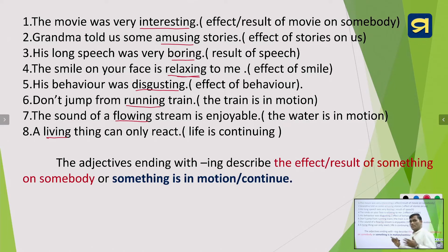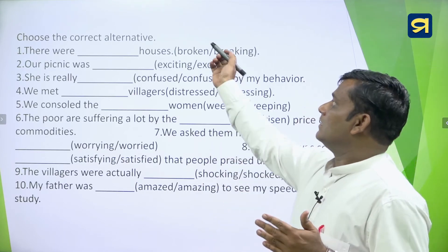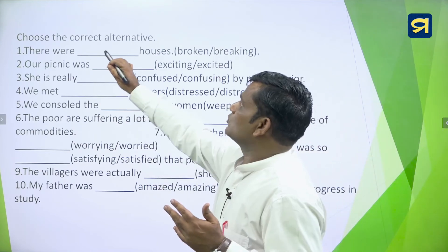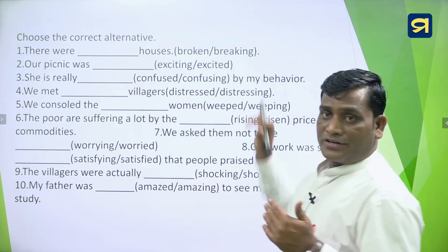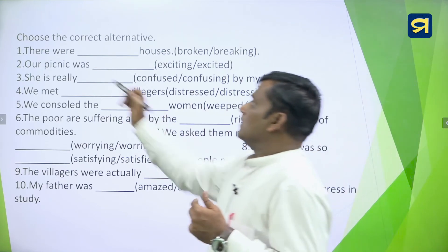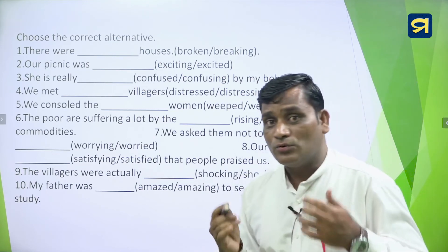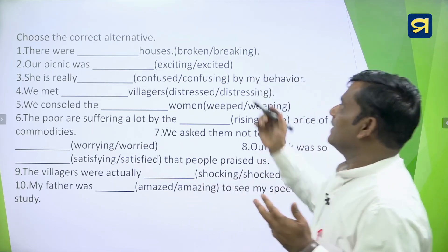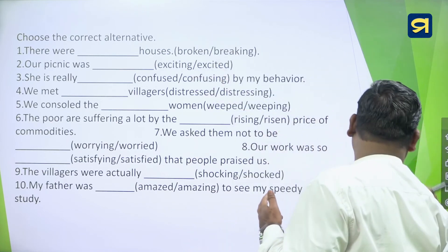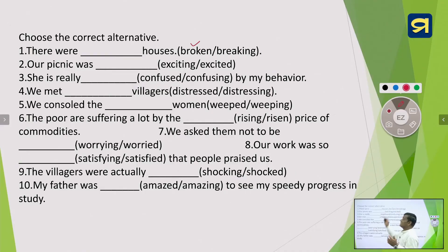Now choose the correct alternative and fill in the blanks. Question 1: 'There were ___ houses' — broken or breaking? The answer is broken, because it tells the condition of the house; the ED form describes condition. Question 2: 'Our picnic was ___' — exciting or excited? The answer is exciting, because the picnic creates the feeling in us — it is the effect, so ING form is used.